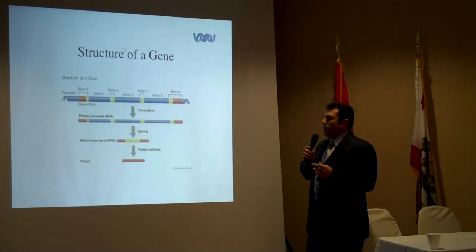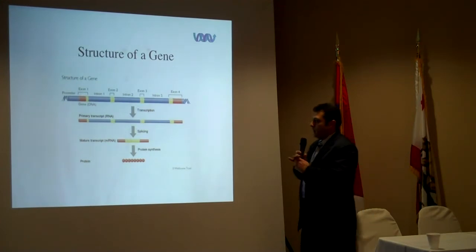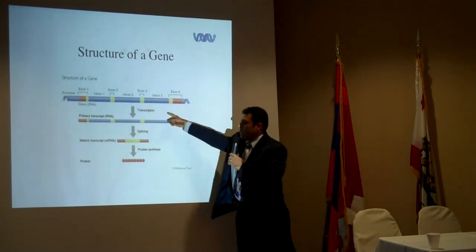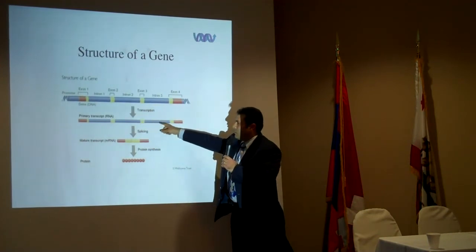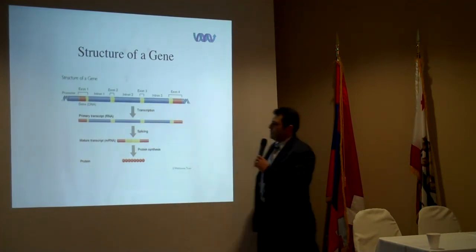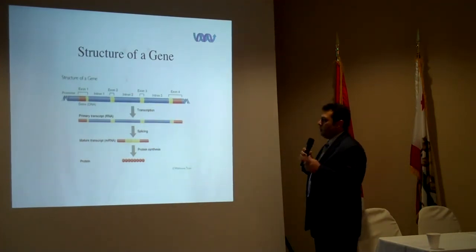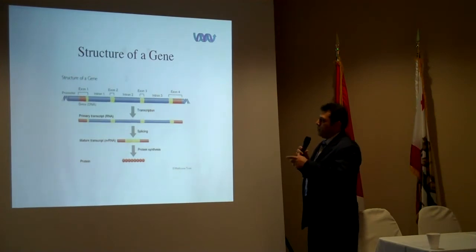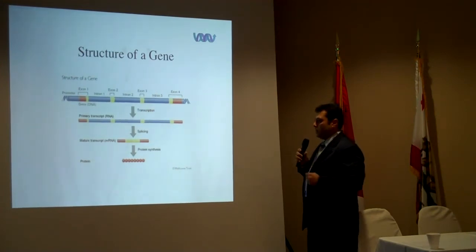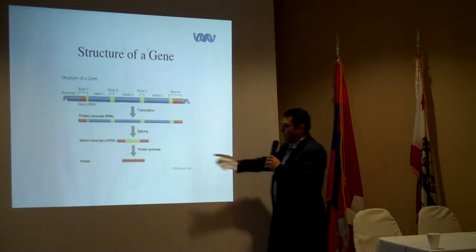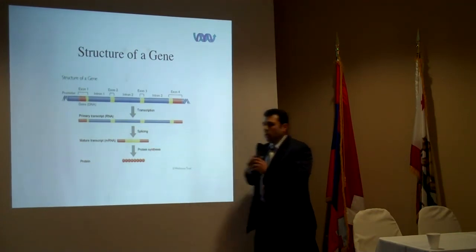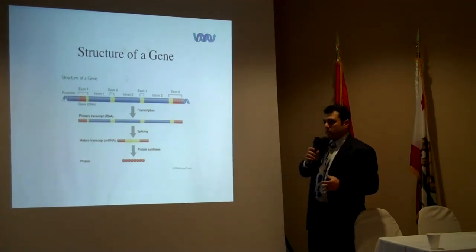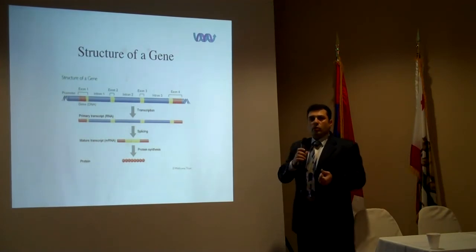Then there are exons and introns. Exons are the coding regions and are very important; introns are spliced out. First they are transcribed to an RNA form, and then the intron segments are removed — the blue segments are gone — and only the yellow and red parts, which are the ends of the genes, remain. This RNA is then converted to an amino acid sequence, which is the protein sequence.